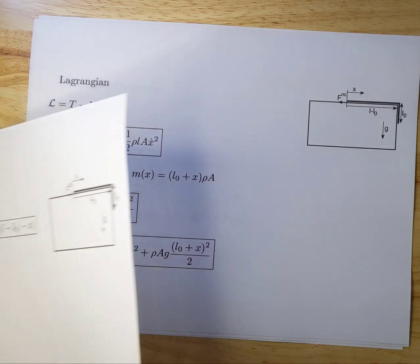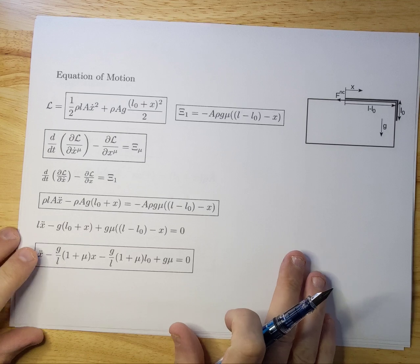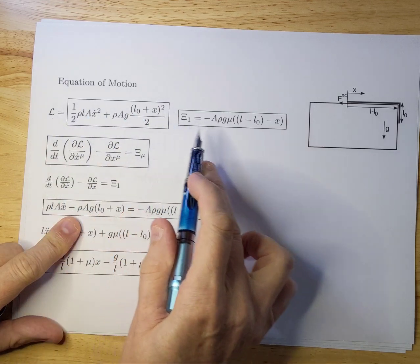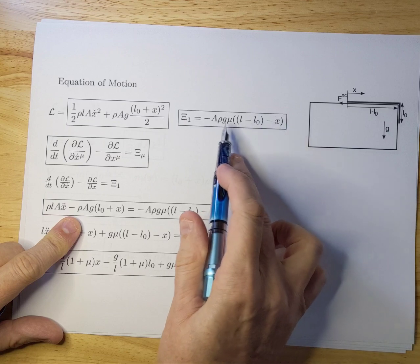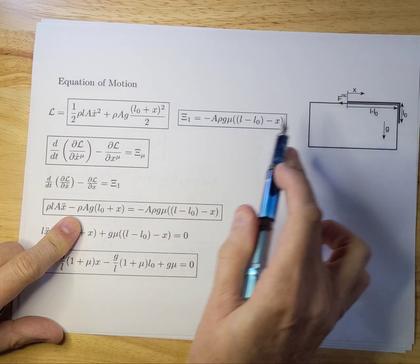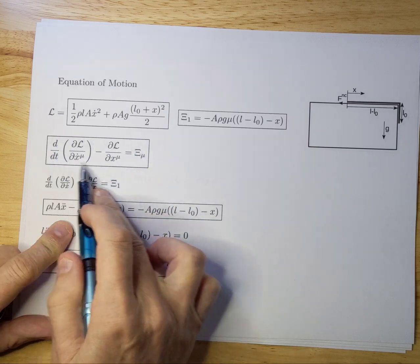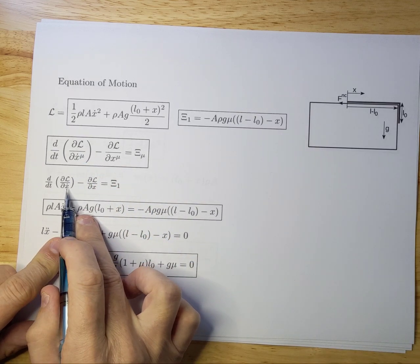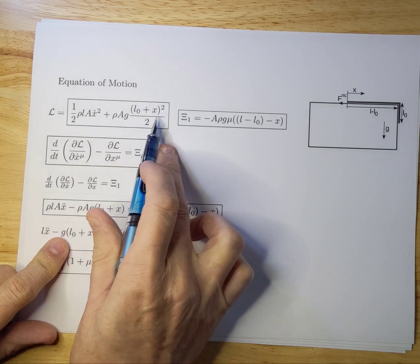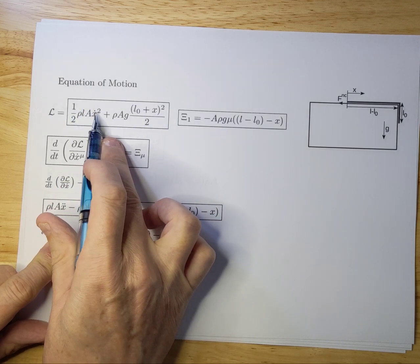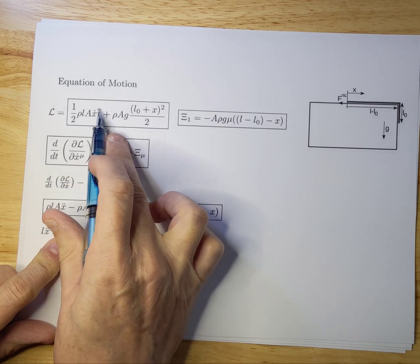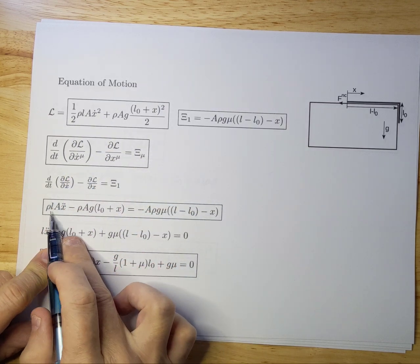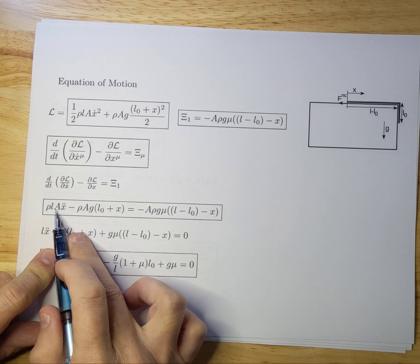So now we can actually derive the equations of motion by using Lagrange's equation. So again, I copied the Lagrangian over here. I copied the generalized force, which is the friction force, the non-conservative force over here. And we're going to use that and plug that into the Lagrangian equation, the Euler-Lagrange equation over here. Now there's only one generalized variable. So you only have to differentiate towards X dot in this case. So let's start with that. If you do that, you get Rho times L times A times X dot. The two is eliminated by this two. And you differentiate that once towards time. And you get Rho times L times A times X double dot over here.